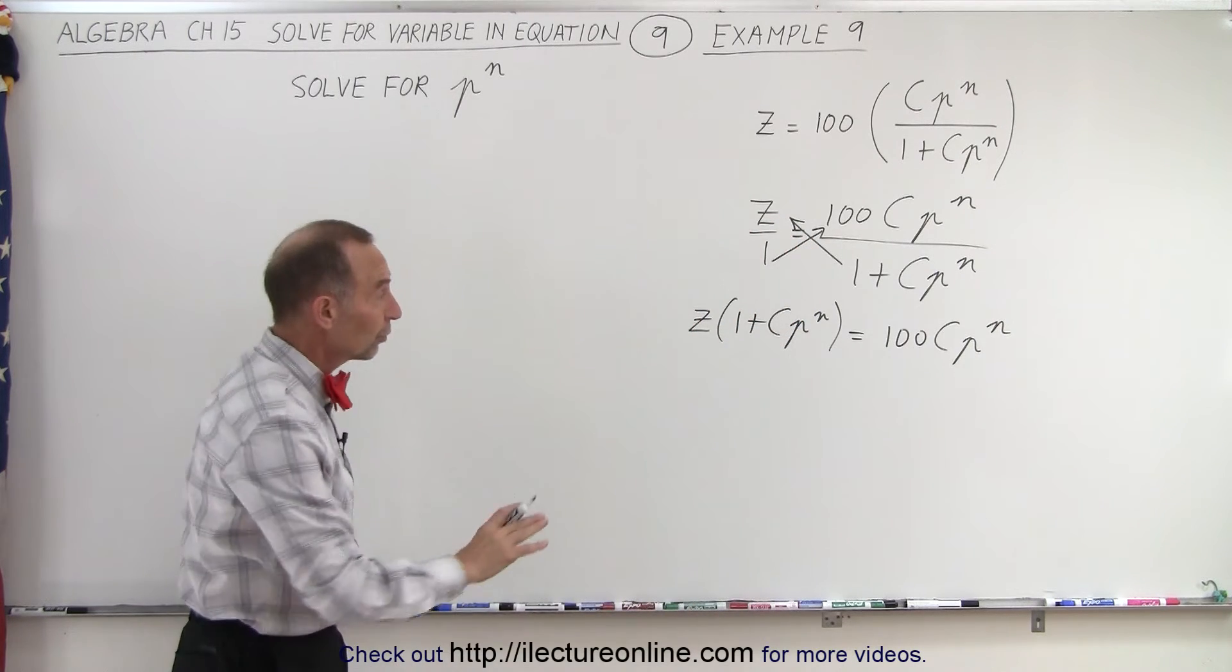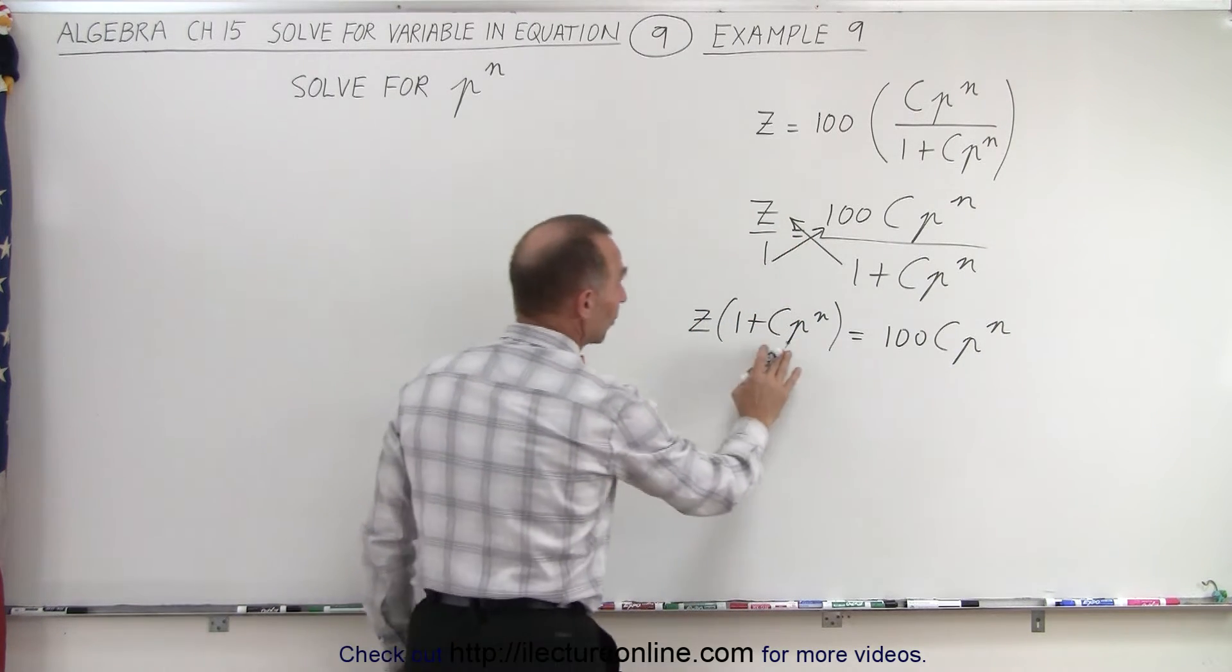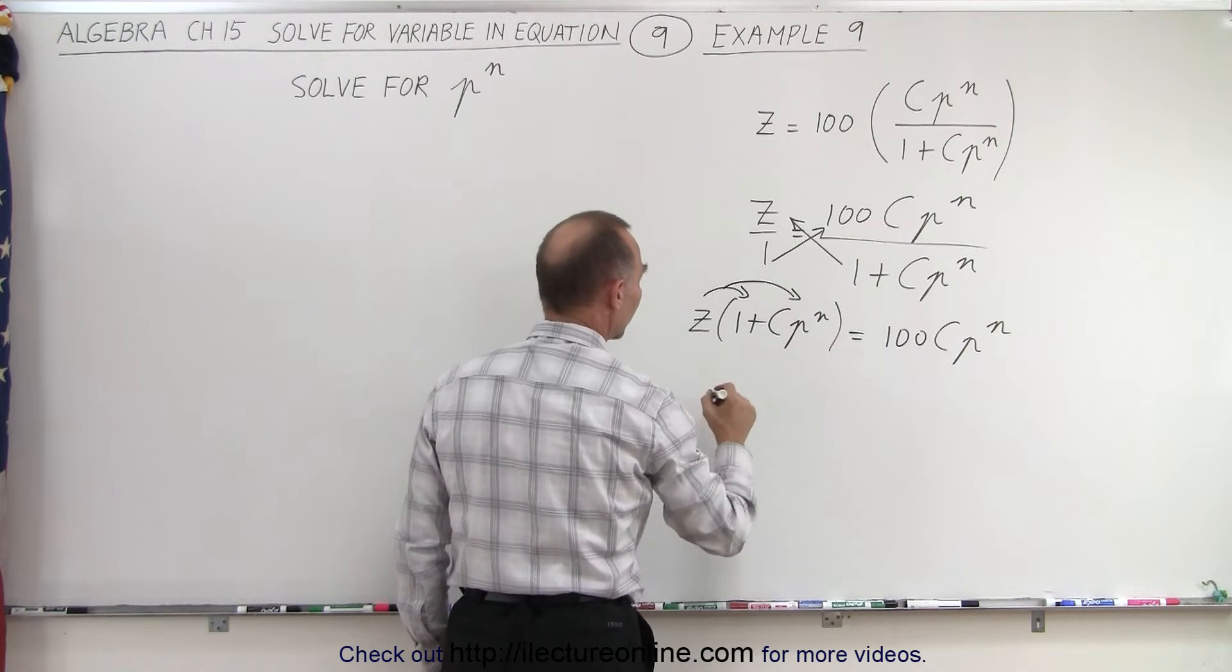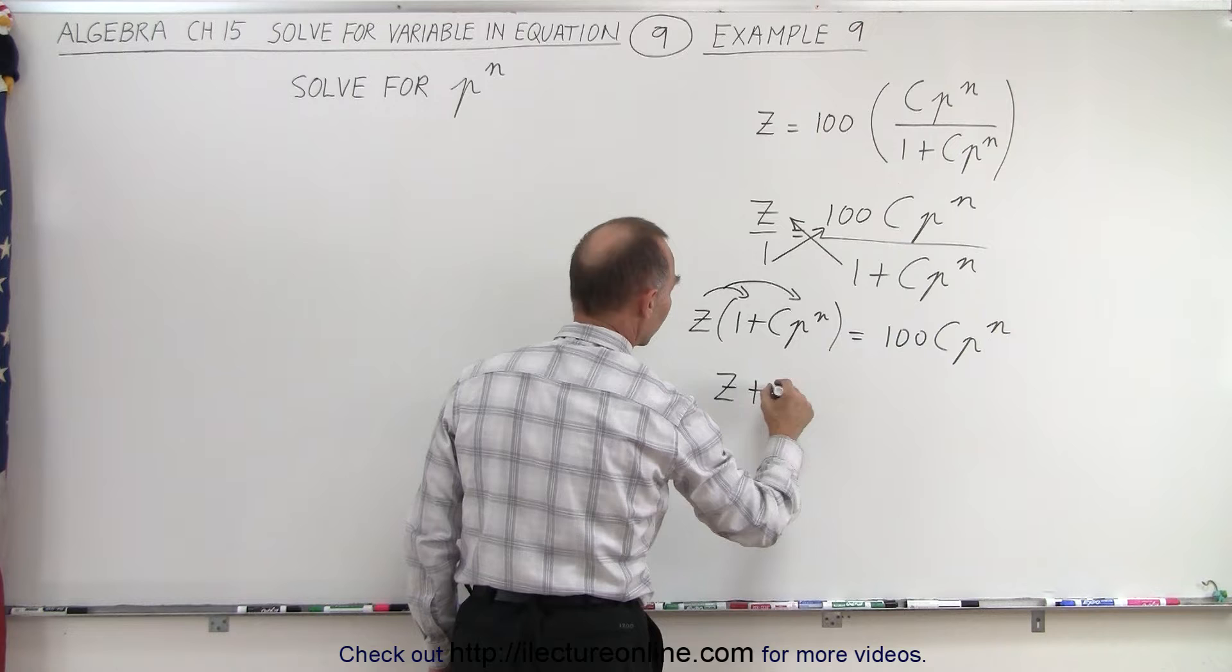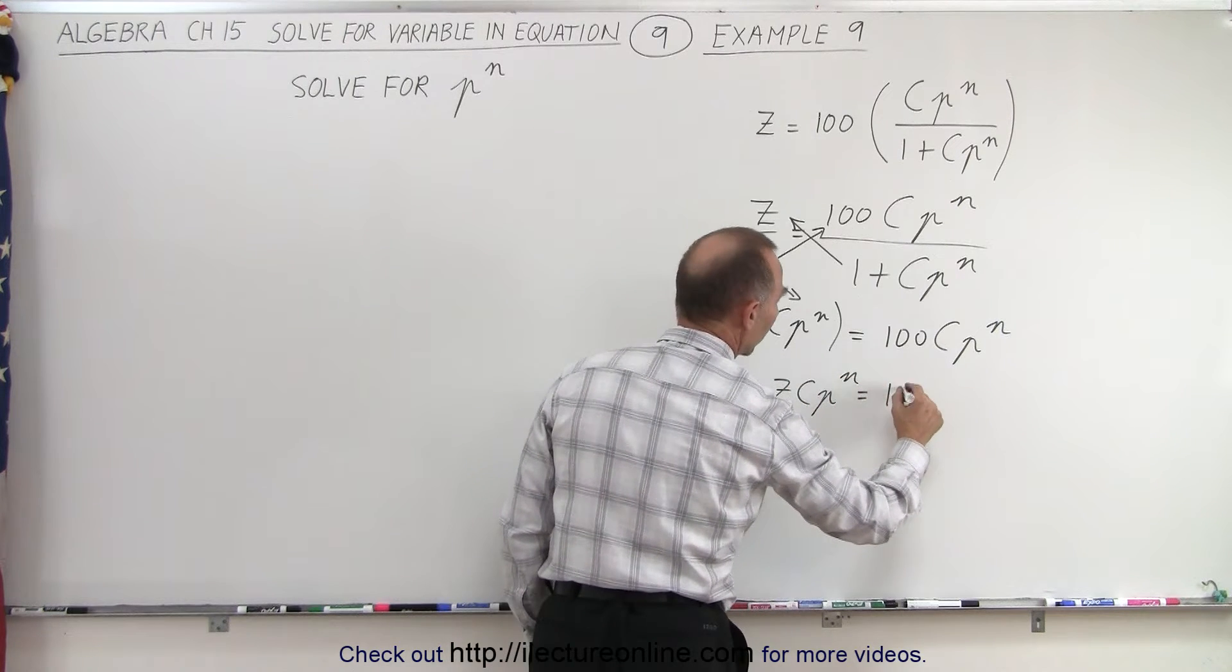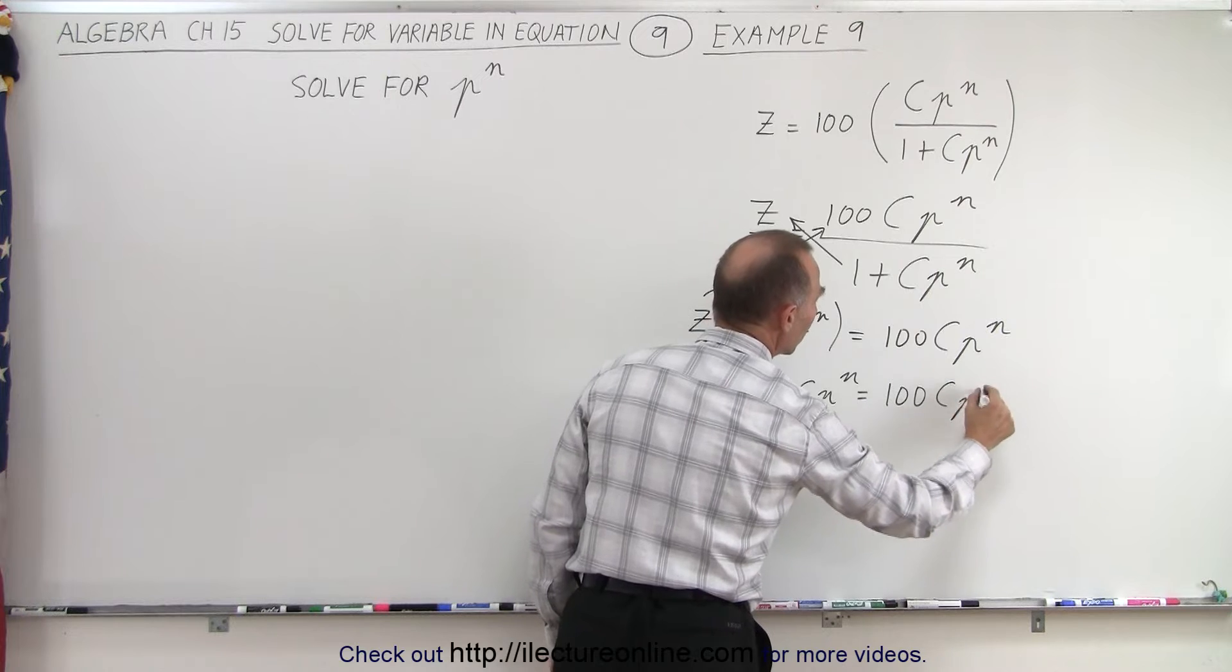Now what we're going to do is multiply the z with the two terms inside the parentheses. We're going to distribute the z like this. So we end up with z plus zcp to the n is equal to 100cp to the n.